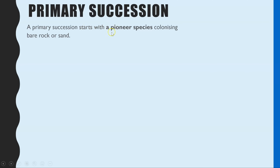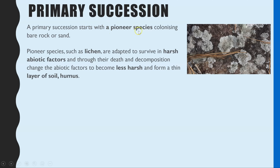The first species to ever colonise bare rock is called the pioneer species. As shown in this diagram, the white-grey-green flat structures on top of the rock are lichen. Lichen are able to survive on bare rock because they can withstand really harsh abiotic factors. The reason for this is that lichen is two different species coexisting together — what we call a symbiotic relationship.